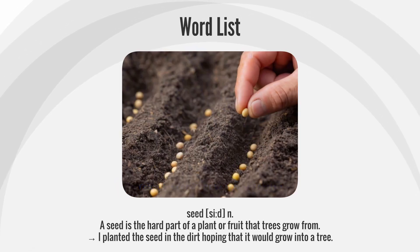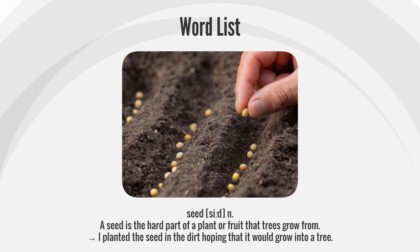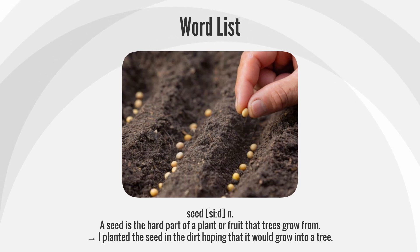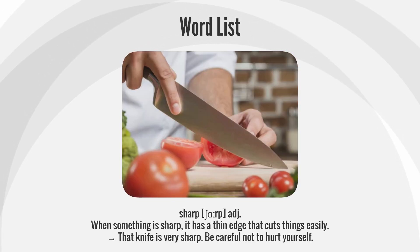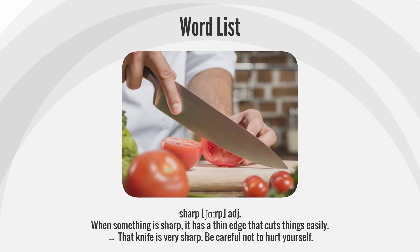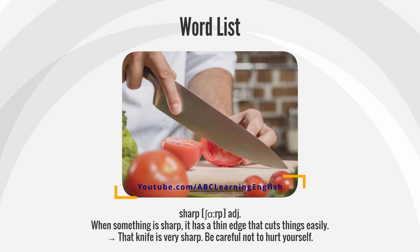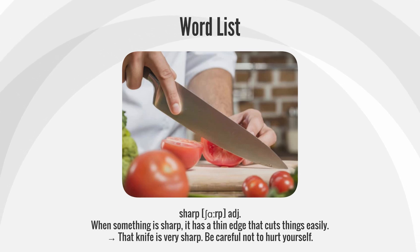Seed — a seed is the hard part of a plant or fruit that trees grow from. Example: I planted the seed in the dirt, hoping that it would grow into a tree. Sharp — when something is sharp, it has a thin edge that cuts things easily. Example: That knife is very sharp — be careful not to hurt yourself.